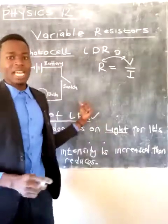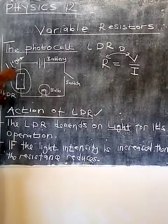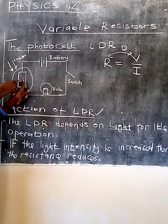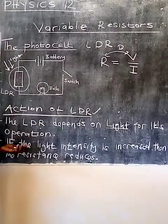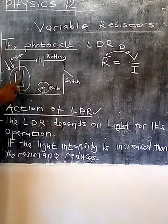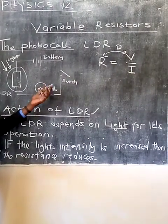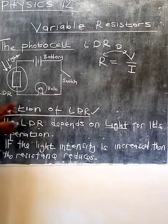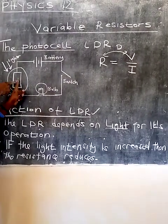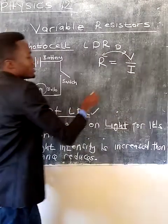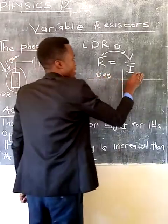This is why we say the photocell determines what happens during the day. During the day, light intensity is high, so resistance reduces. At night, light intensity is low, so resistance increases. Once resistance reduces during the day, voltage reduces. At night, resistance increases because light intensity is low, meaning voltage also increases. For simplicity, let's set up a table with columns for day and night.